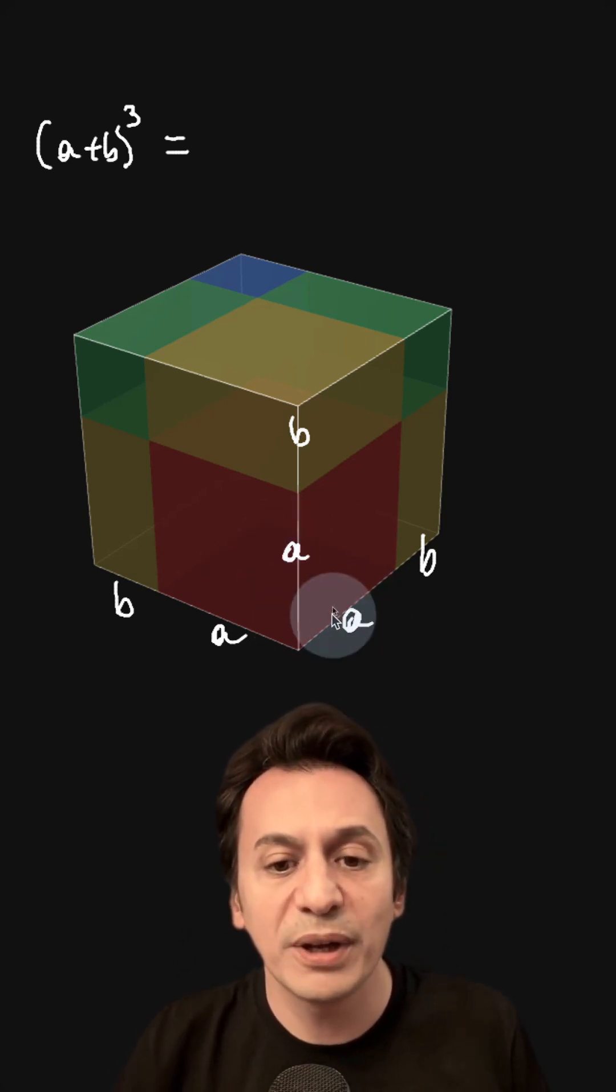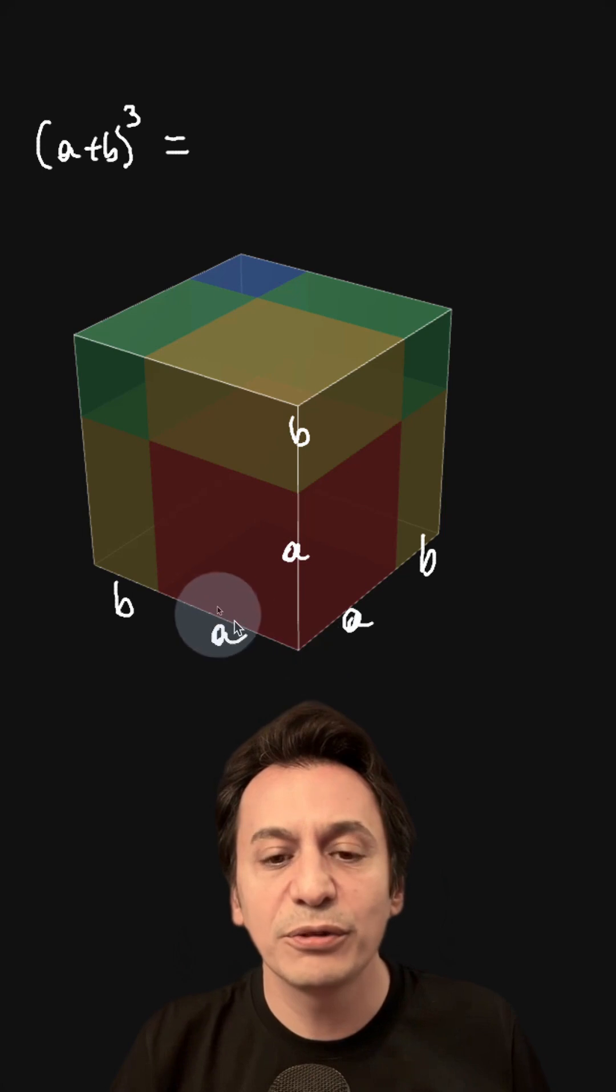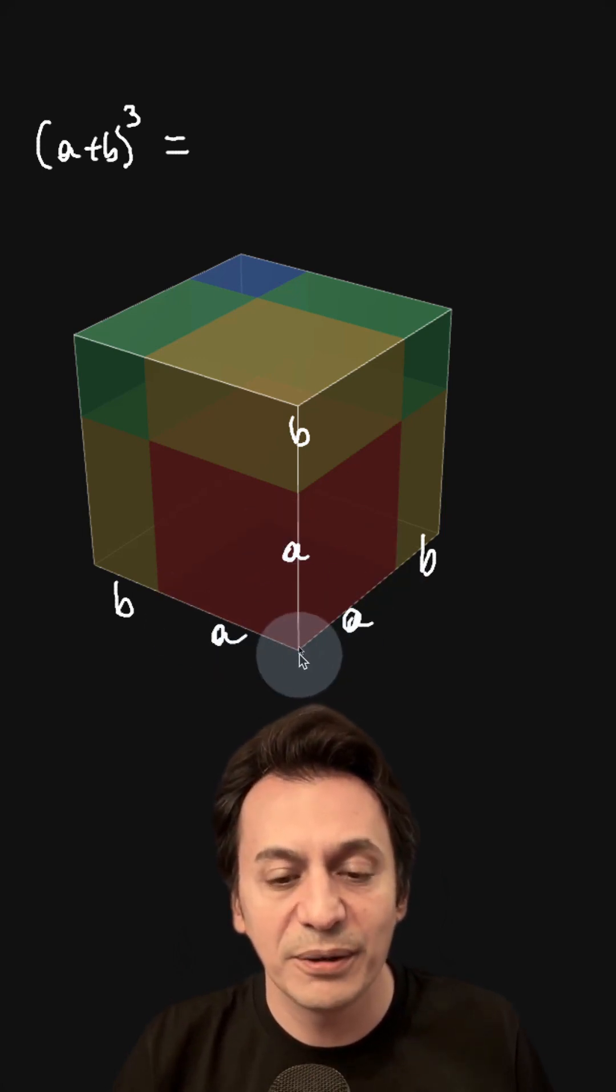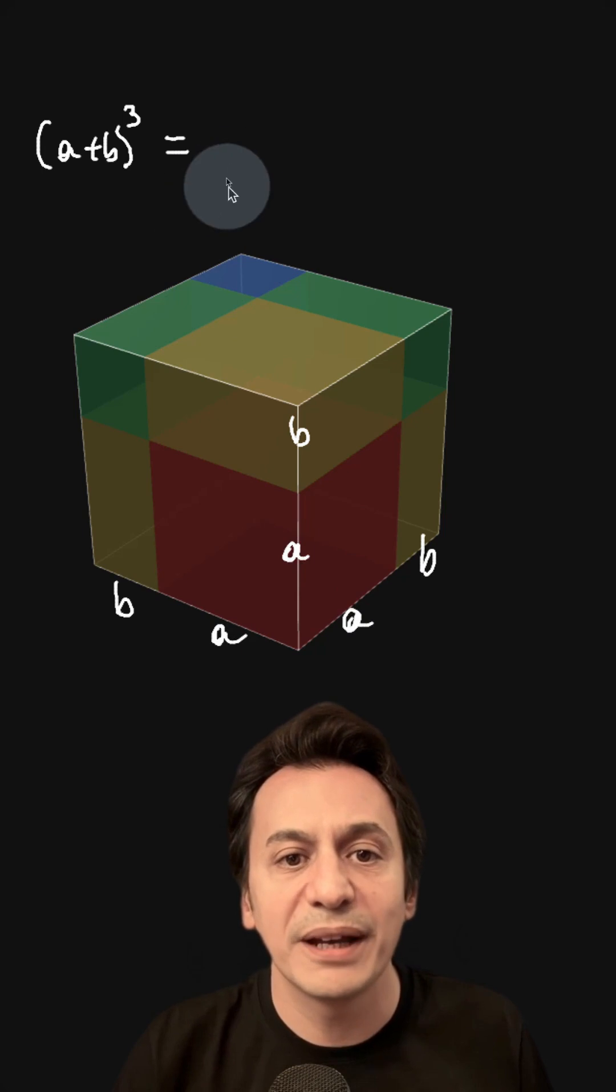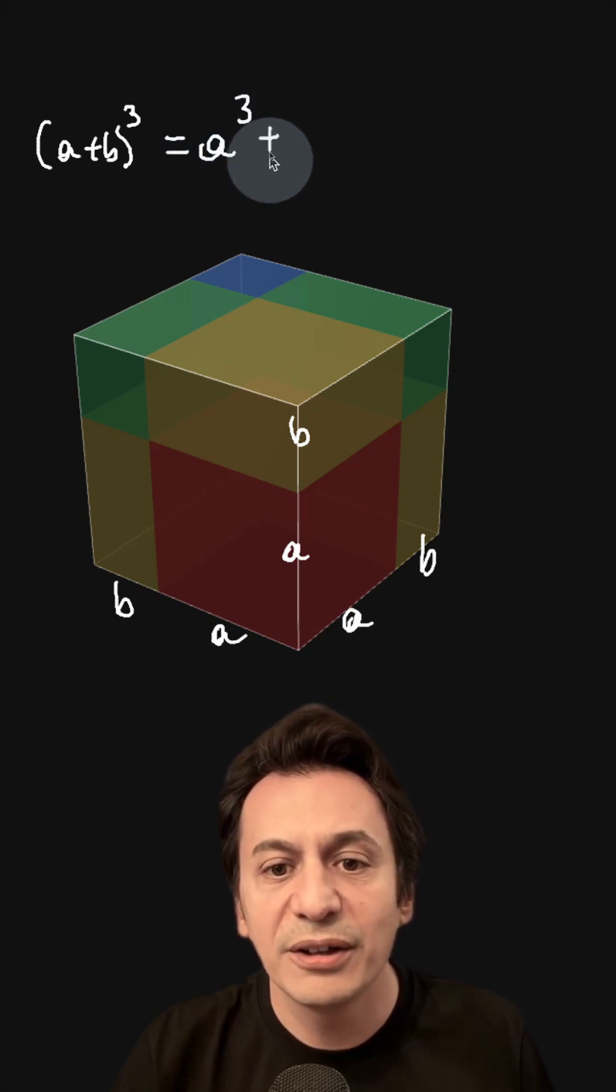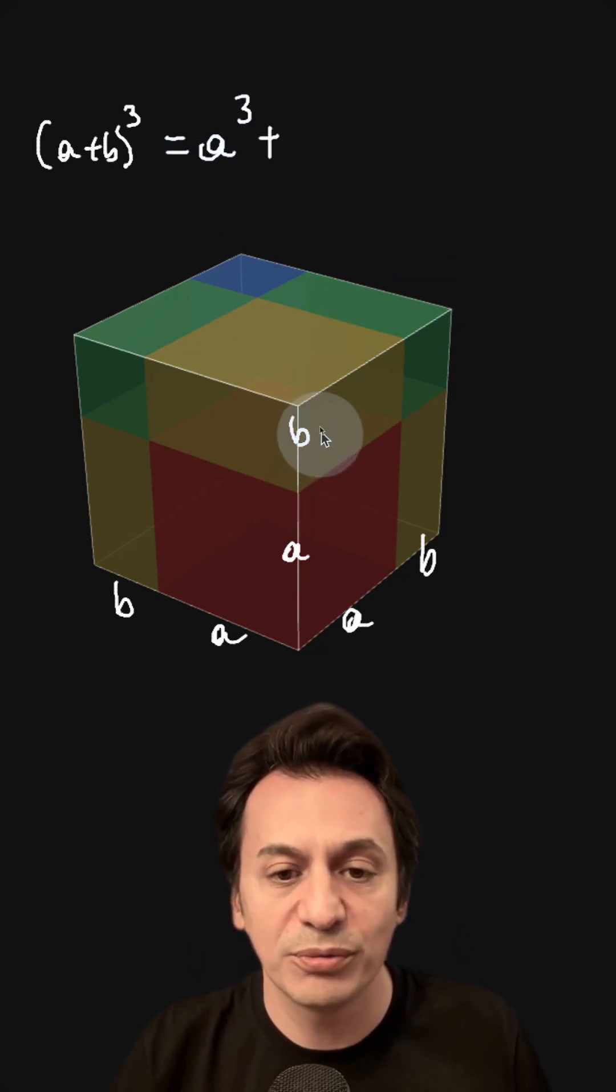Let's start with the red cube. Since one edge of the red cube is A, I multiply them together: A times A times A, which is A cubed.